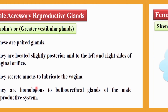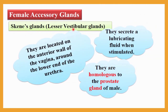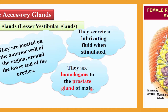Skene's gland, also called the lesser vestibular gland, is located on the anterior wall of the vagina around the lower end of the urethra. They secrete a lubricating fluid when stimulated during sexual intercourse. They are homologous to the prostate gland of the male.